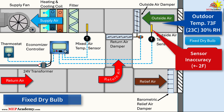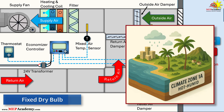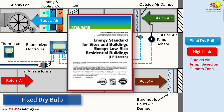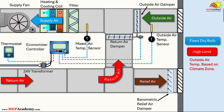Sensor inaccuracies, typically around ±2°F, can exacerbate these issues, resulting in higher energy use. In humid climates like Zone 1A, such as Miami, this could lead to unacceptable indoor humidity levels if not carefully set. Additionally, energy standards like ASHRAE 90.1 restrict its use in some warm, moist climates where it might increase mechanical cooling demands. Optimal set points vary by climate – 69°F for humid zones like 1A–5A, up to 75°F for drier zones like 3C, 6B, or 8.